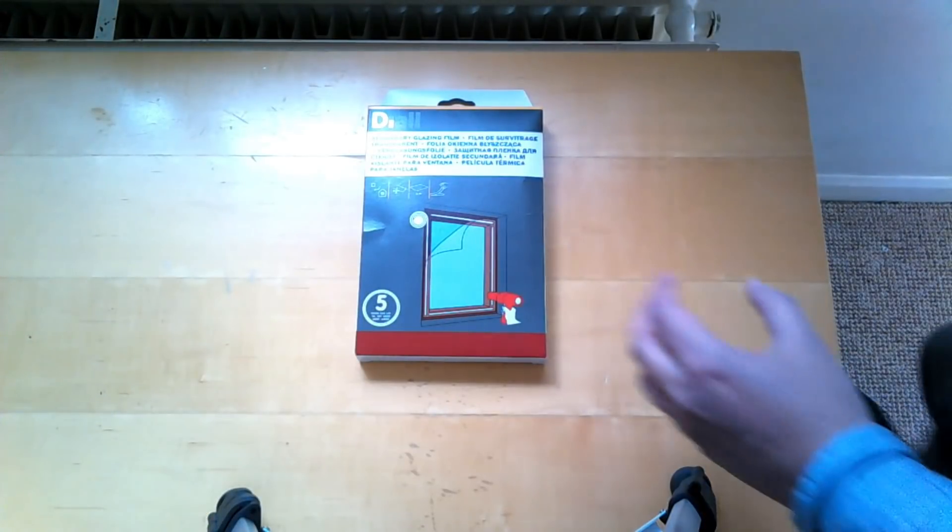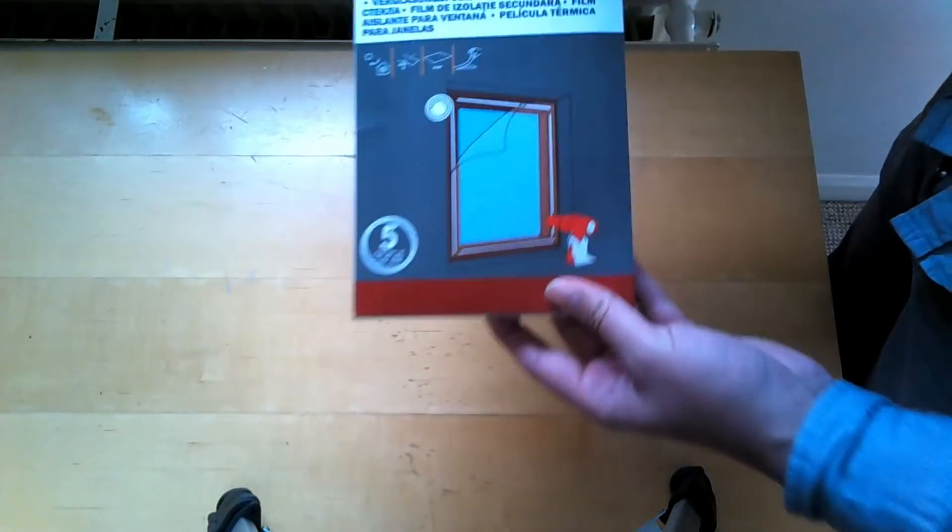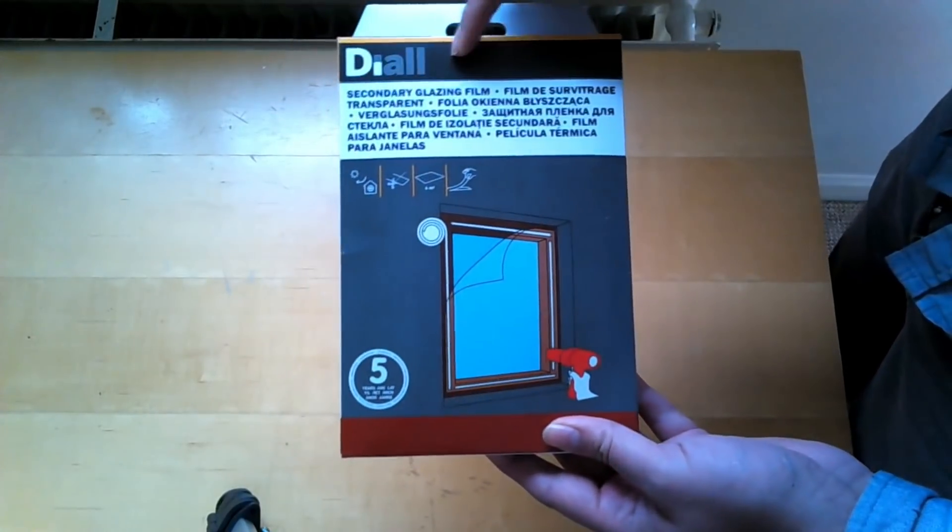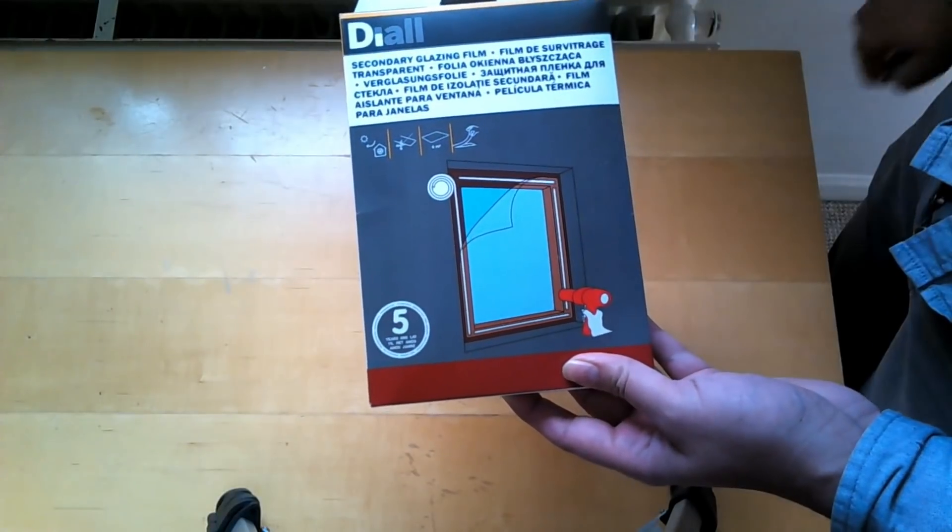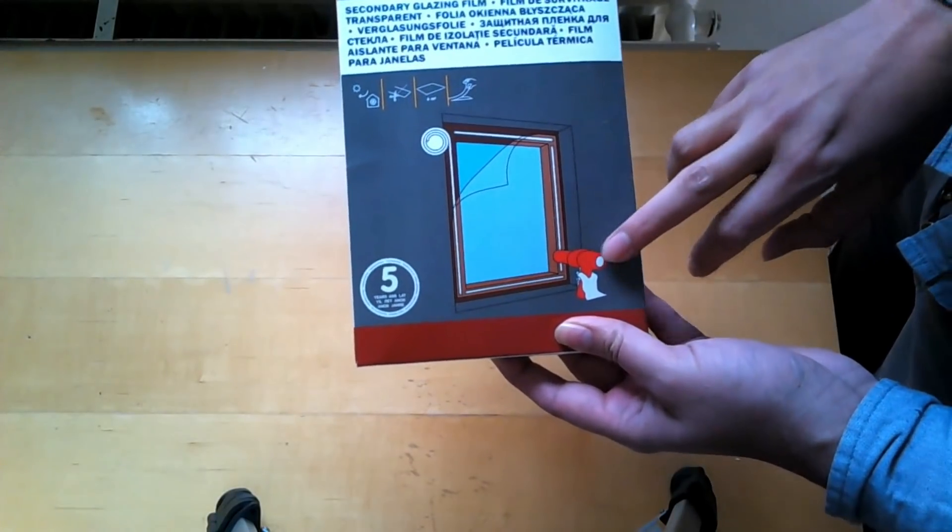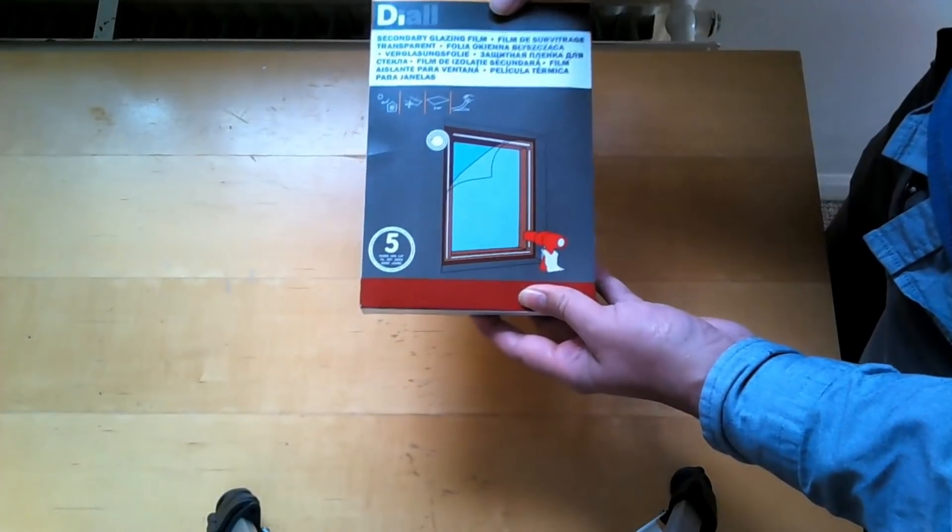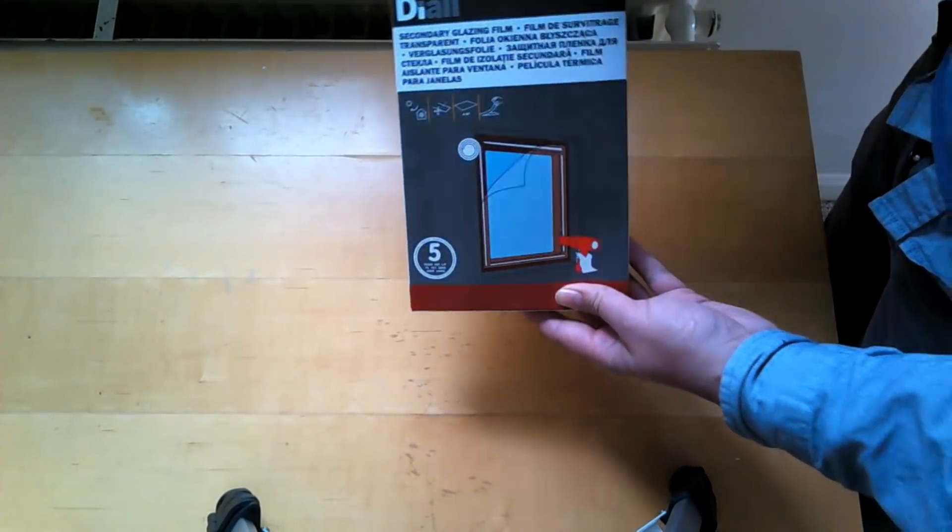You're looking at the product I was talking about. It's called the window insulation kit or additional glazing kit. This one's by a manufacturer Dial. It's a six meter square glazing sheet and would require a hair dryer for application. I found this in my local B&Q store in the draft proofing section, but you can also order this through Amazon.